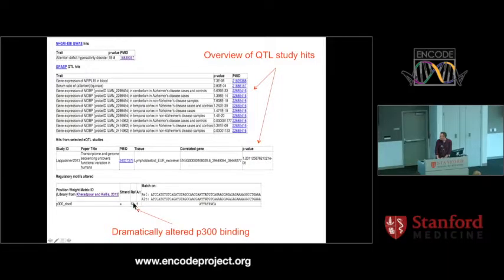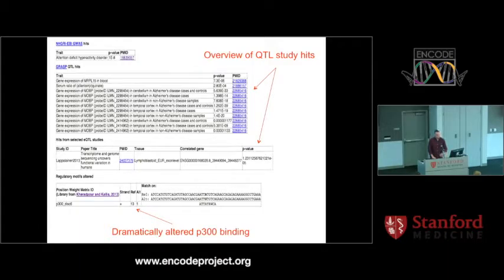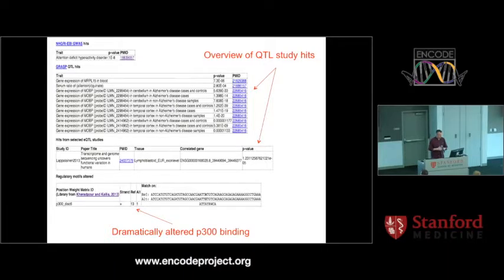Importantly, and this is where HaploReg is again similar to RegulomDB, it also looks at whether a particular variant is going to disrupt or create a particular binding site. In this case, we see that there is a P300 binding site in or around the reference allele, and this is the log odds score of that particular motif instance. We see that with our particular SNP, it actually disrupts that motif very, very strongly, and the log odds score really plummets.